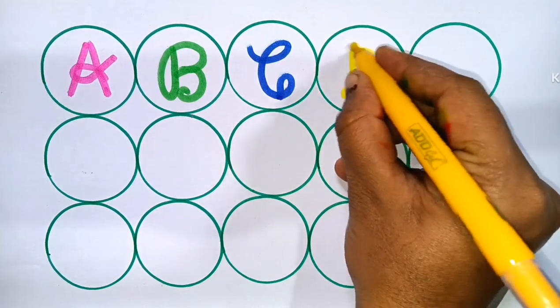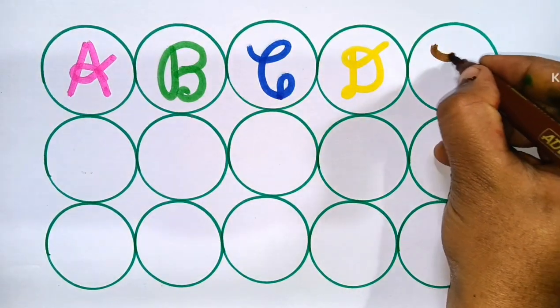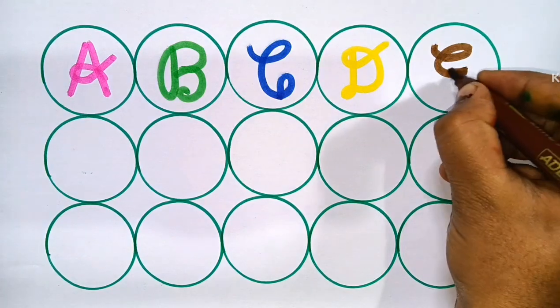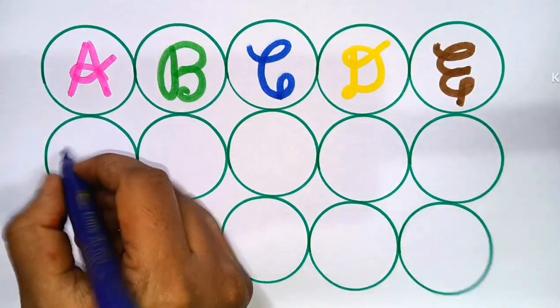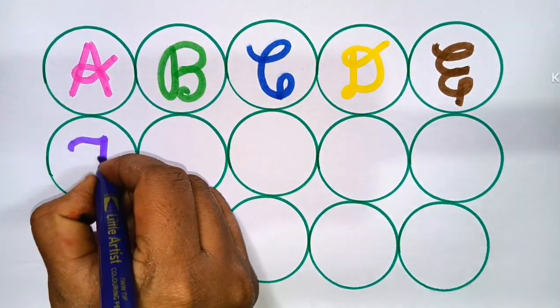D for Dog. E for Elephant. F for Fingers.